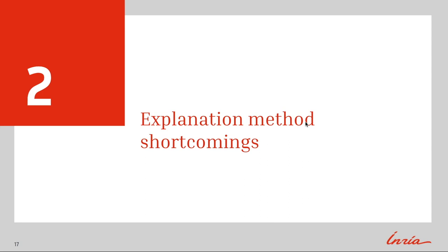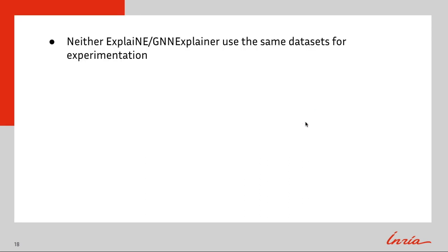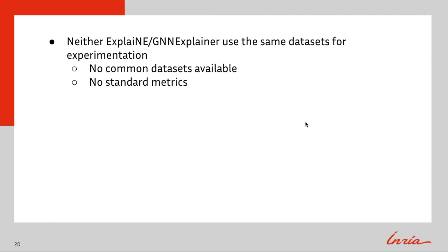Now we will address the shortcomings of these explanation methods. The weak point of ExplaiNE and GNN Explainer is the empirical evaluation of explanation quality. Comparisons amongst these algorithms is difficult as these papers do not use the same dataset or scoring metric. In fact, there are no common datasets available to measure explanation quality, and there are no standard scoring metrics to quantify performance.